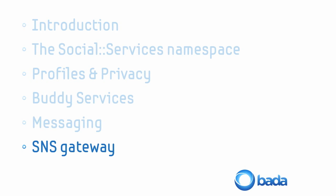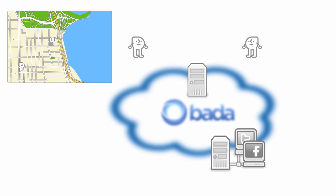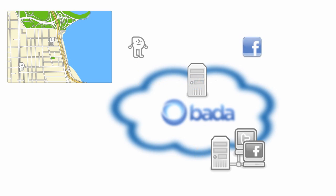The SNS Gateway allows you to create applications that can communicate with third-party social networking services such as Facebook or Twitter. You write code to use Bada's SNS APIs and don't have to deal with the low-level details or have to worry about coding in other languages such as JavaScript or Python. Unlike the other social services features, when using the SNS Gateway the Bada server is just acting as a mediator between the device and third-party servers. Developers just need to write their code using the Bada C++ APIs and Bada takes care of the details of communicating with the third-party servers.